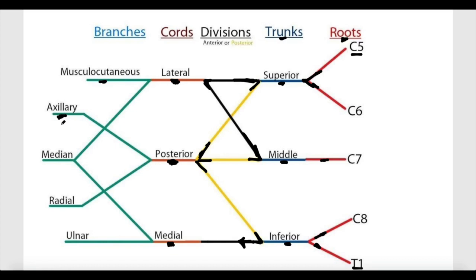The second branch is the axillary nerve, which supplies the muscle that forms the contour of the shoulder, called the deltoid muscle. Next is the median nerve, which is very important because it supplies most of the muscles in the anterior compartment of the forearm. It goes underneath the flexor retinaculum through the carpal tunnel, and this nerve is the one injured in carpal tunnel syndrome. Next is the radial nerve, which supplies all of the posterior compartments of the upper limb — the posterior compartment of the arm and the posterior compartment of the forearm.